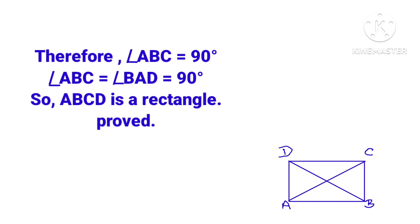Angle ABC is equal to angle BAD. Since angle ABC is equal to angle BAD, so angle ABC equals angle BAD equals 90 degrees. So, ABCD is a rectangle, proved.